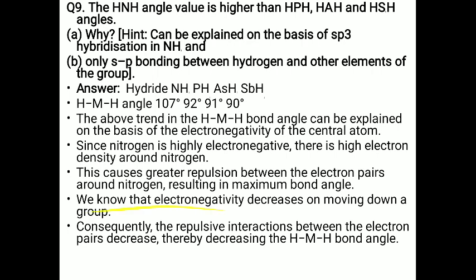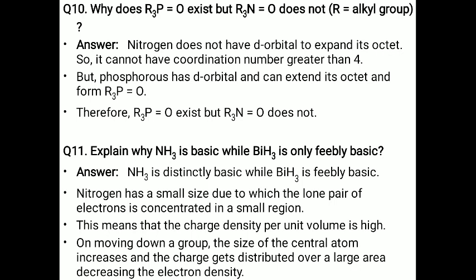Question 10: Why does R3P=O exist but R3N=O does not, where R is the alkyl group? Question 11: Explain why ammonia is basic but bismuth trihydride (BiH3) is only feebly basic — meaning ammonia is more basic and BiH3 is less basic. Why?